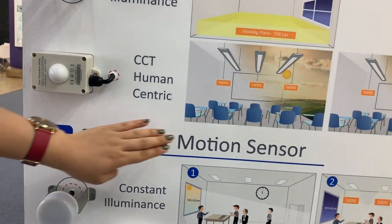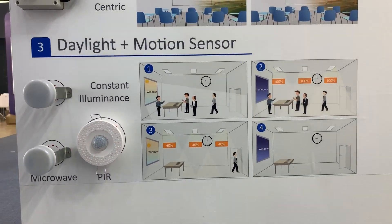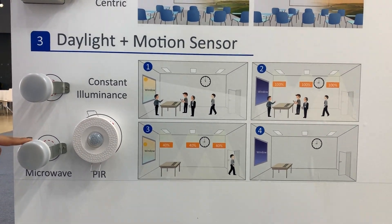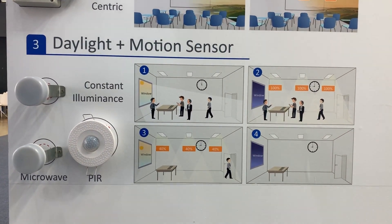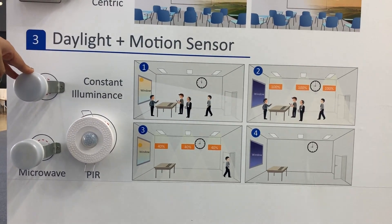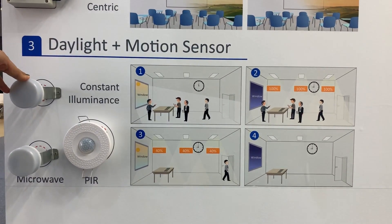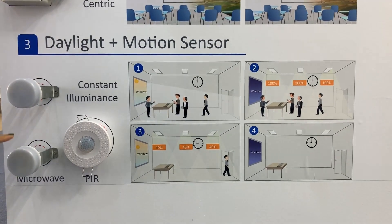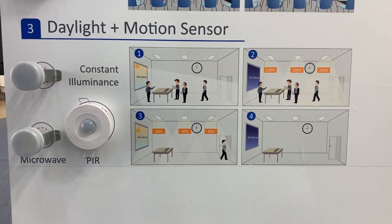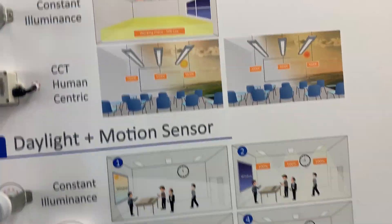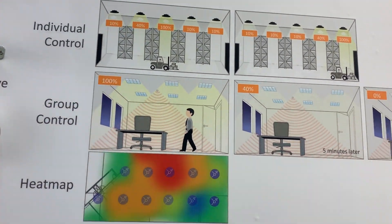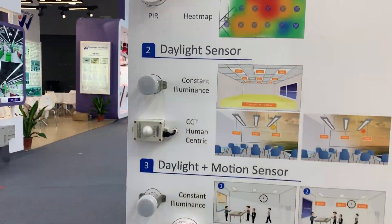The daylight sensor and motion sensor can also work together — combining a daylight sensor with a microwave motion sensor. When someone is present, the daylight sensor works to maintain a constant lux level, such as 500 lux. When nobody is present, the microwave sensor takes over to keep the lights at the waiting level or background level. That covers the introduction of the sensors.